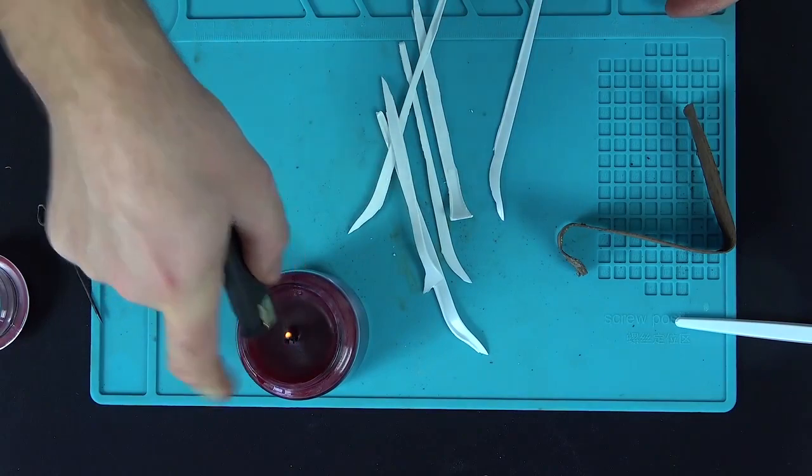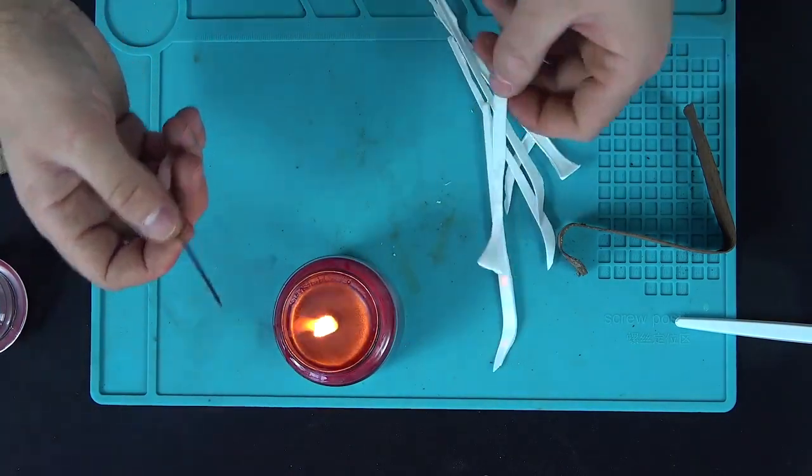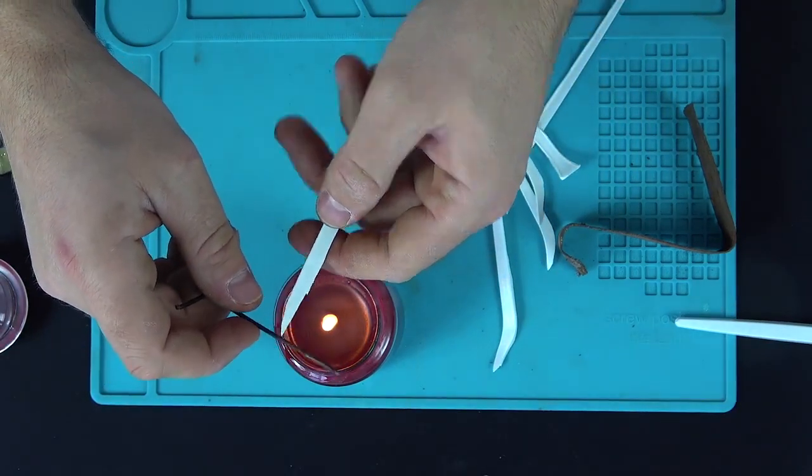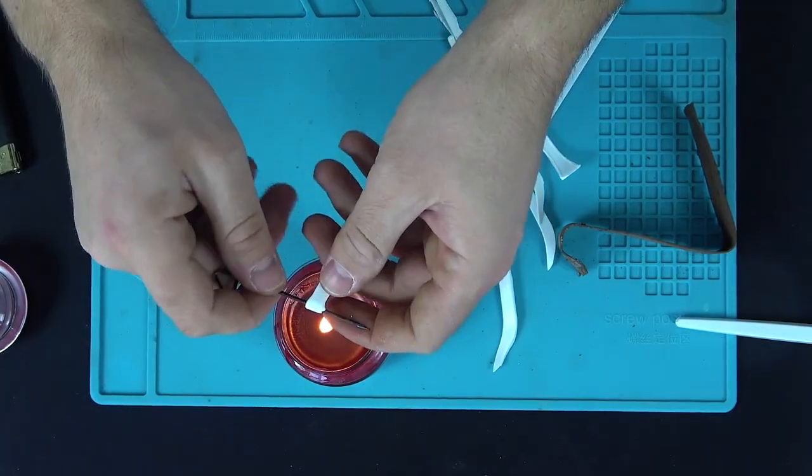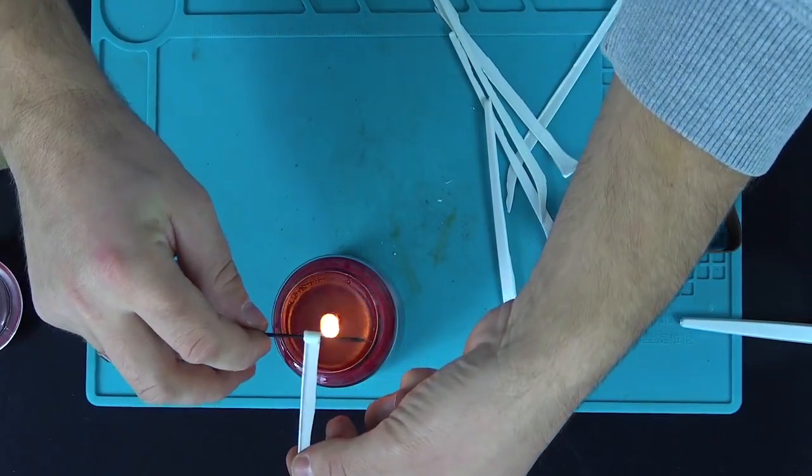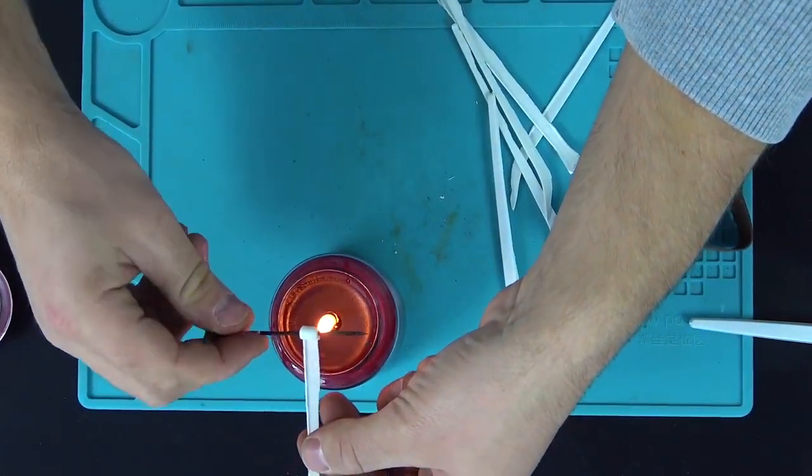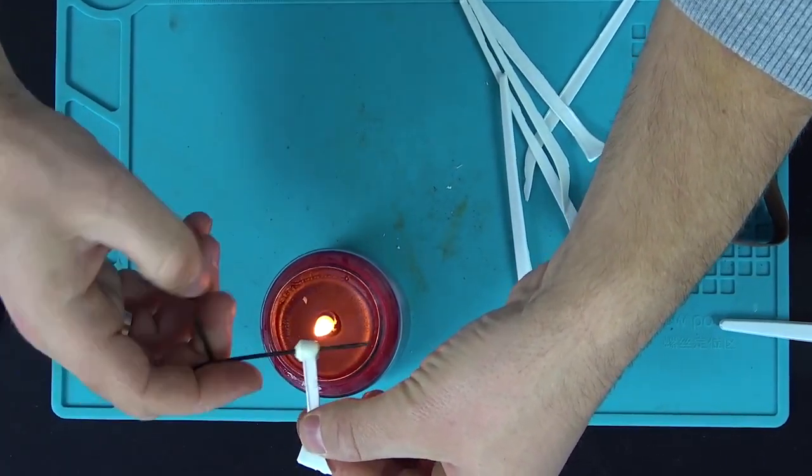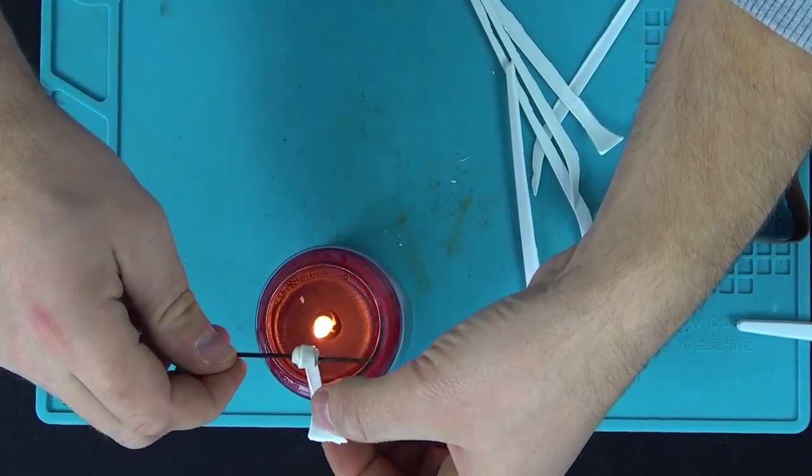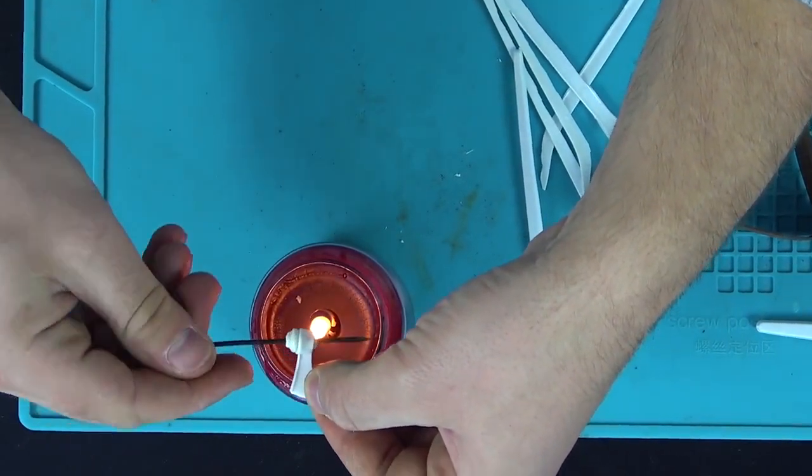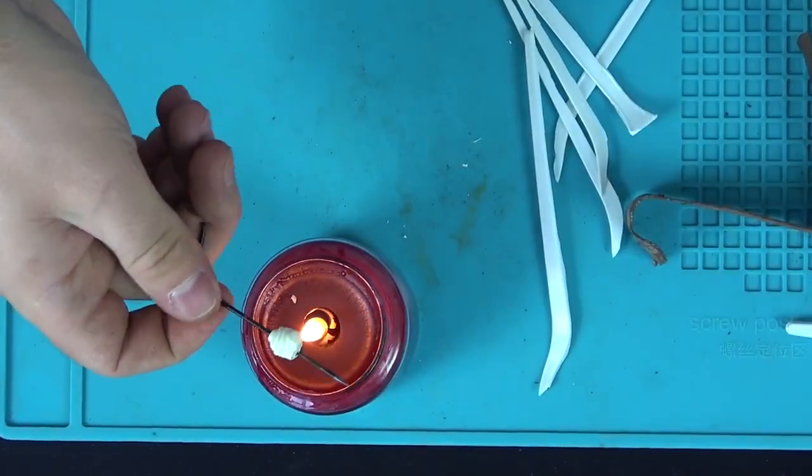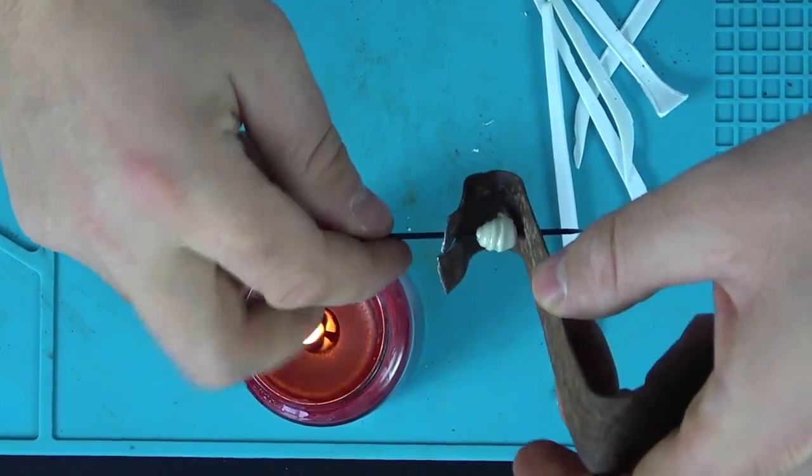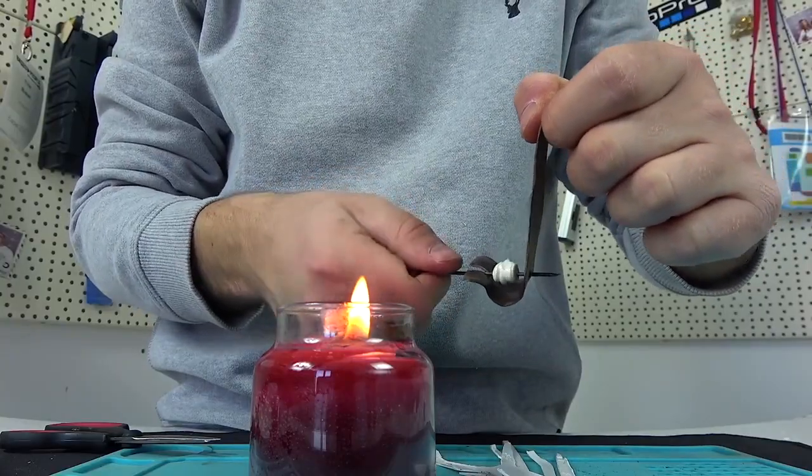We light a candle, take a so-called awl, and at a short distance we begin to melt and rub the plastic on the awl. Periodically, insert them all into the hole, then into the slot and turn it. Thus, we will have a small molding process.